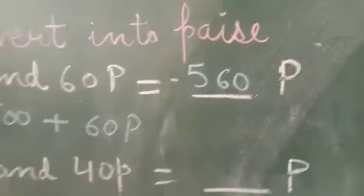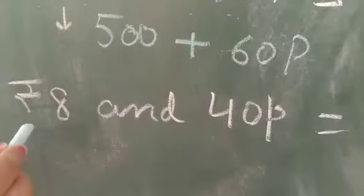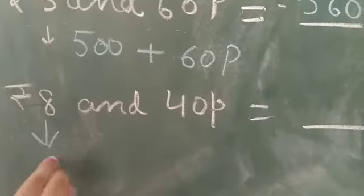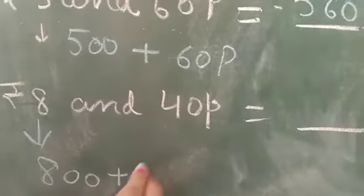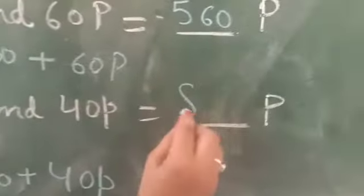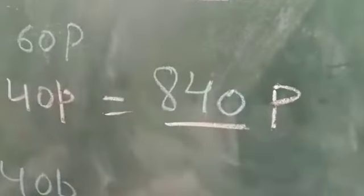Next, take one more example: rupees 8 and 40 paise. Rupees 8 will become 800, plus 40 paise. What is the answer? 840 paise. Clear?